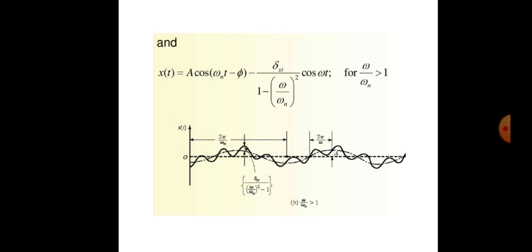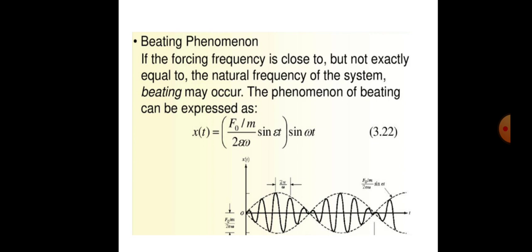As an example formulation: x(t) = A sin(ωₙt − φ) − [δₛt / (1 − (ω/ωₙ)²)] · cos(ωt), for omega upon omega-n greater than one. In summary, the key conditions are: the forced frequency, the beating condition, and the resonance condition. The beating phenomenon is closely related to the resonance condition. This concludes the discussion on harmonically excited forced vibrations.